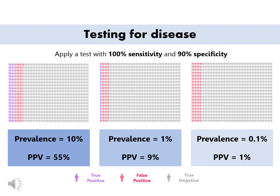Otherwise, the so-called positive predictive value — your chances of having the disease if you are positive — will be very low, and sometimes so low that it is useless for clinical practice. I suggest that you go back and do the calculations on your own to understand very well that as disease prevalence becomes lower, the chances of finding those who have the disease with biochemical tests are much less than if we are dealing with a common disease.